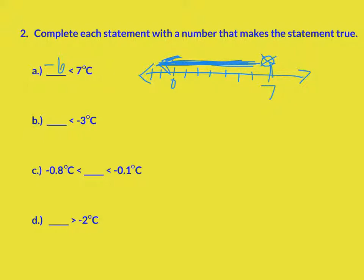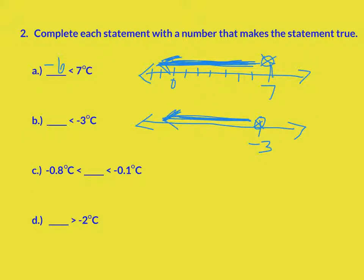Next I need something that's smaller than negative 3. I'm going to place my negative 3 on the number line, and it can't equal negative 3 — it has to go in the left direction: negative 4, negative 5, negative 6, negative 7, negative 8, negative 9, negative 10, etc. I'm simply going to choose negative 11 because I know that's on the number line where it keeps going.